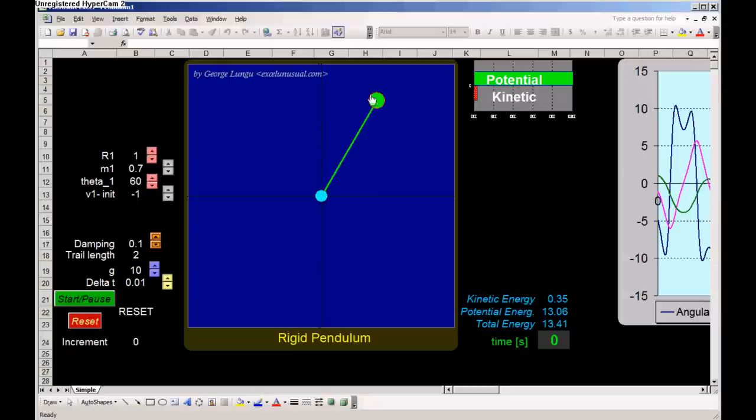The trail length. You will see this weight here at the end of the pendulum. It leaves a historical trail. You can adjust the length. And this is the time step.